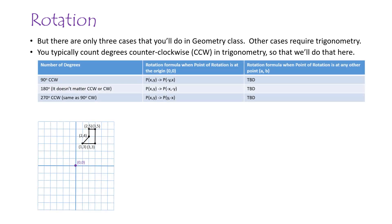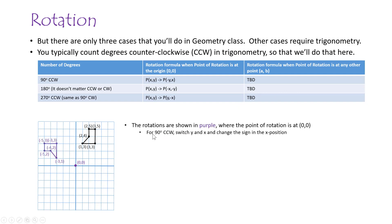Here are the three cases: 90 degrees counterclockwise, 180 degrees (which is the same whether clockwise or counterclockwise), and 270 degrees counterclockwise — which is the same as 90 degrees clockwise. Here are the formulas when the point of rotation is at the origin. For 90 degrees counterclockwise, you switch the X and Y, then change the sign of the first position in the ordered pair.